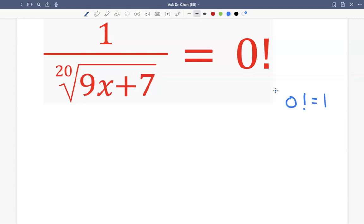Okay, it's defined as 1. 0 factorial equals to 1. So when we know that, we know this equals to 1.